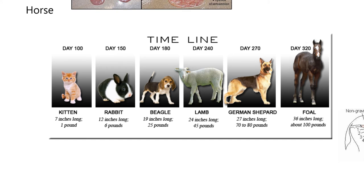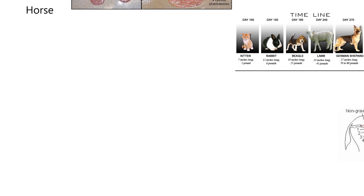This graphic is the timeline for gestation in a horse. At 320 days, the foal is about three feet long and maybe 100 pounds. At 100 days, the fetus is about the size of a cat and weighs one pound. At 150 days, it's the size of a rabbit. At 180 days, the size of a beagle. At 240 days, the size of a lamb. At 270 days, that mare has a fetus about the size of a German shepherd. A neat little graphic — but remember, it's all about the horse.